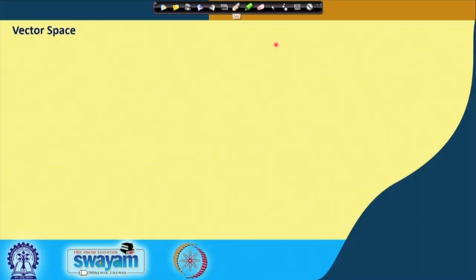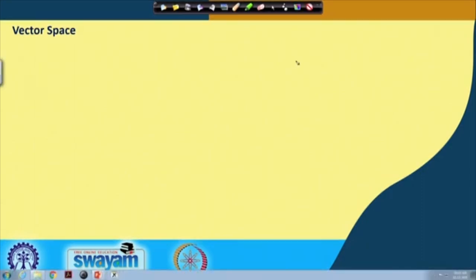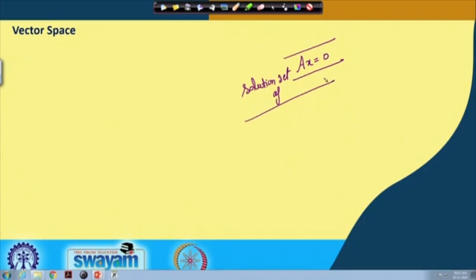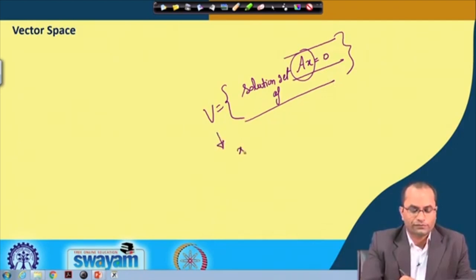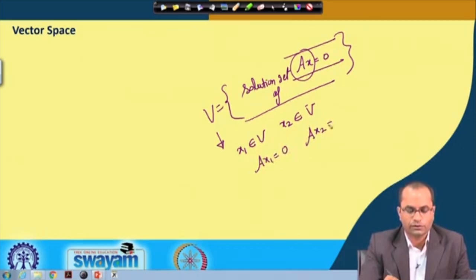Recalling from the previous lecture, the solution set of the homogeneous system of equations Ax = 0 is a very special set. Let us call this set V, which contains all the solutions of Ax = 0. If we take any two elements x1 and x2 from this set, that means Ax1 = 0 and Ax2 = 0, since both are solutions.